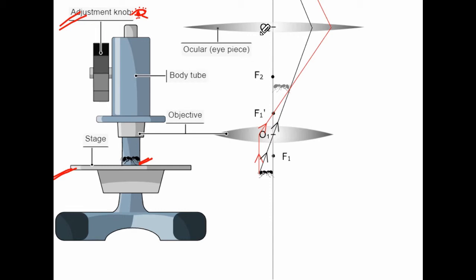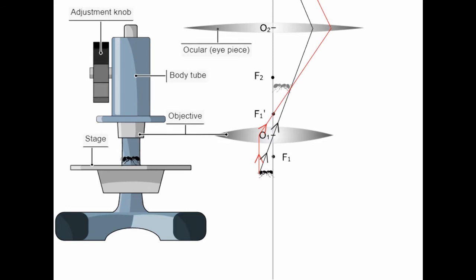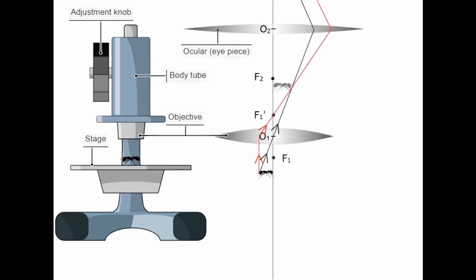You may have done this focusing work in the biology lab, where you rotate the adjustment knob to get a clear image. When I rotate the knob, observe what is happening — the lens positions are varying.